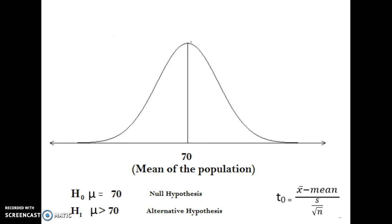For this example, I'm saying the alternative hypothesis is that the mean height of American men is actually bigger than 70 inches. And as long as some basic assumptions are met as far as the size of the sample and the distribution of the underlying population, we know that when we take samples of American men and look at the average height, it's going to follow a normal distribution.